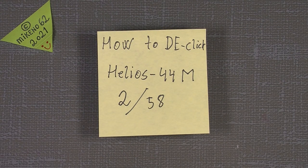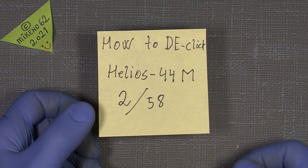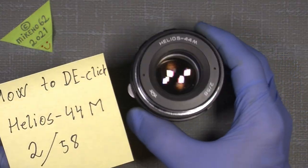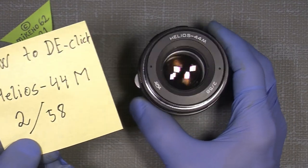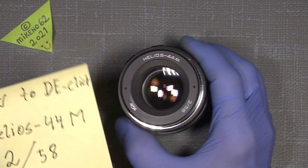Hello everybody and welcome to another tutorial in camera and lens repair. This time I will show you how you can de-click a Helios 44M-2 aperture, the 58mm version.